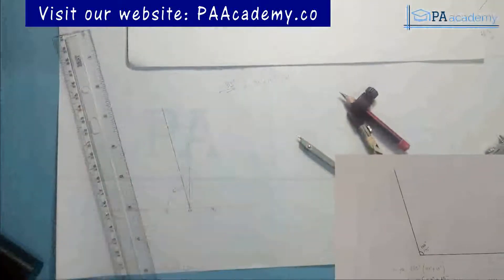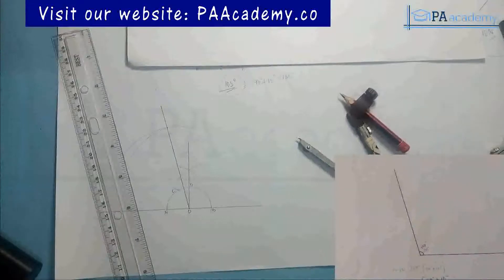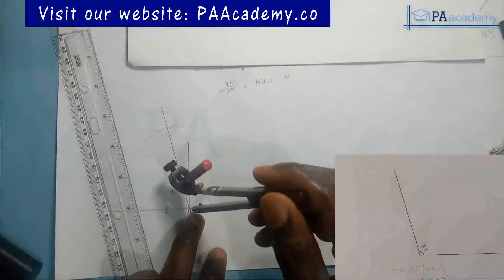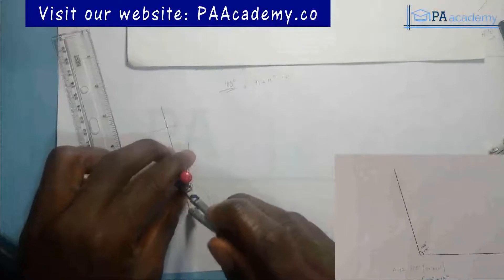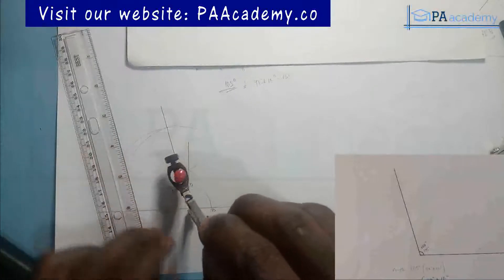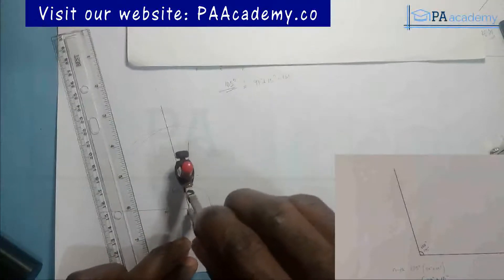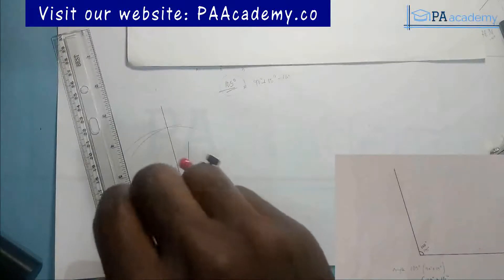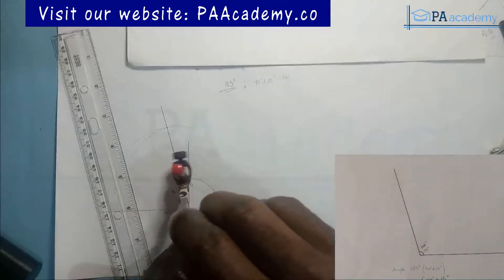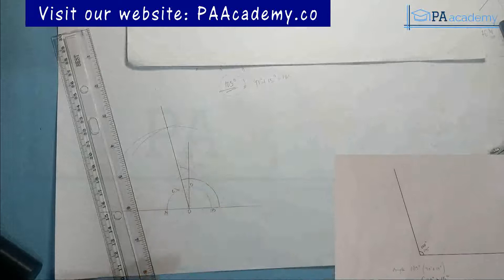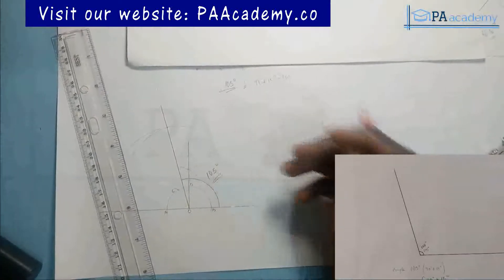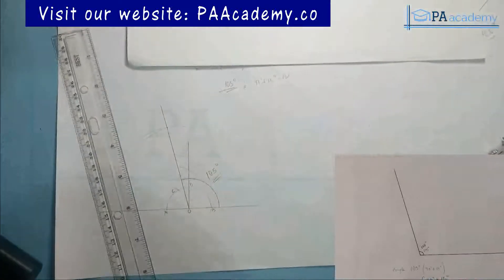Having done that, we've been able to get our angle 105 degrees. This right here is our 105 degrees. This is how you go ahead to construct angle 105 degrees.